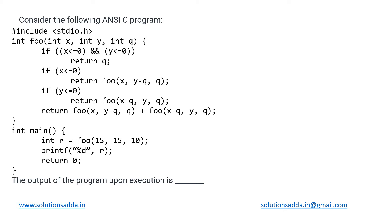In the main function we are calling the function foo with parameters 15, 15, and 10. When we go into this function, let us denote foo as f. The initial parameters are 15, 15, and 10. Checking the conditions: x less than 0 — no; y less than or equal to 0 — no; the other two conditions also do not satisfy.